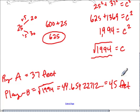So you could say that this player is 45 minus 37 feet further than player A, or 8 feet further.